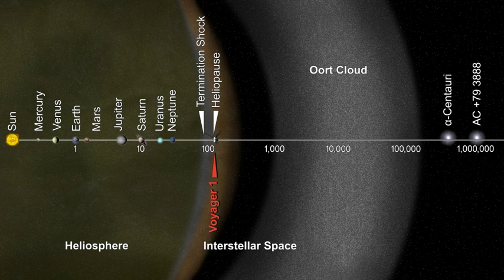The outer Oort cloud is only loosely bound to the Solar System, and thus is easily affected by the gravitational pull both of passing stars and of the Milky Way itself. These forces occasionally dislodge comets from their orbits within the cloud and send them toward the inner Solar System. Based on their orbits, most short-period comets may come from the scattered disk, but some may still have originated from the Oort cloud. Astronomers conjecture that the matter composing the Oort cloud formed closer to the Sun and was scattered far into space by the gravitational effects of the giant planets early in the Solar System's evolution.